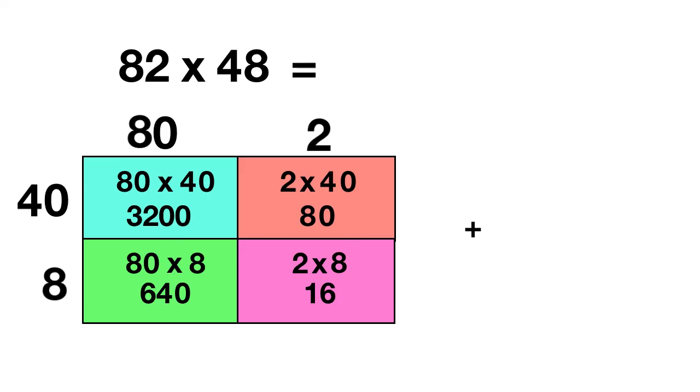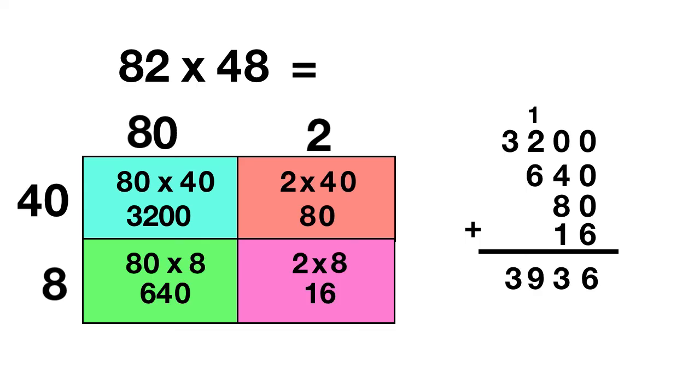When you add this all together, 3,200, 640, 80, and 16, you can add them up to get 0, 0, 0, 6. 0 plus 4 plus 8 plus 1 is 13, 1 plus 2 plus 6 is 9, and just the 3,000s is 3. So 82 times 48 is 3,936.